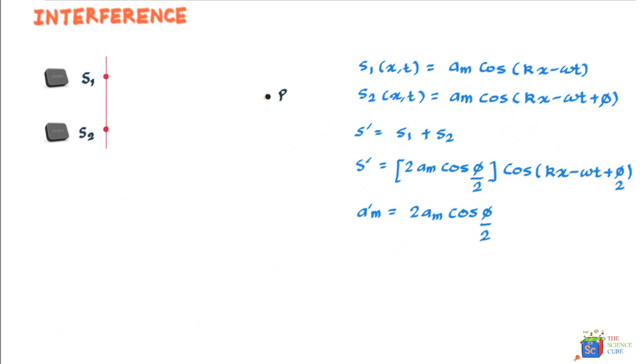We will now seek to understand what happens to the two waves when they reach point P. The assumption here is that the distance to P is much more than the separation between the two sources. This helps us assume the waves are traveling in the same direction towards P. If these two waves had traveled the same distance to reach point P, they would be in phase when they reach there.